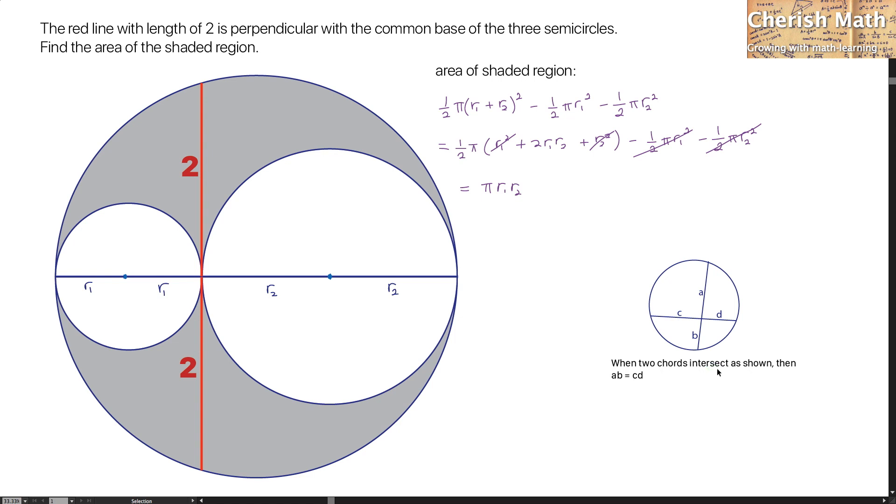When two chords intersect as shown, then A times B is equal to C times D. By using this theorem on this diagram, we are going to get, when 2 multiplied with 2, that is equal to 2R1 multiplied by 2R2.